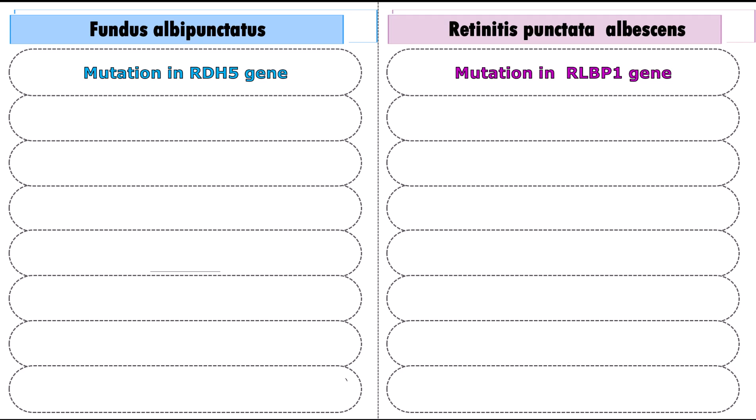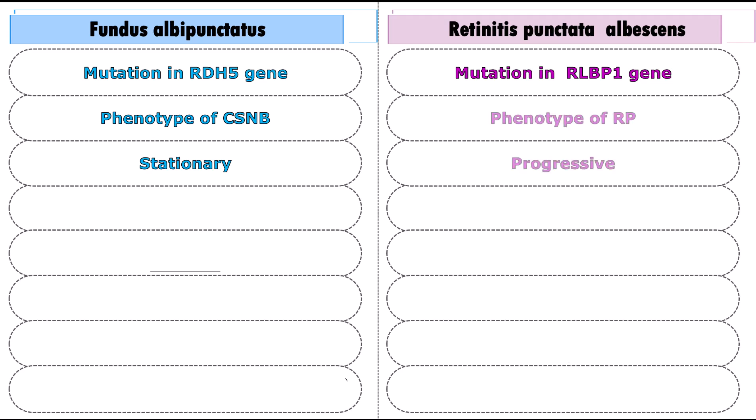First of all, the type of gene mutation is different. Whereas fundus albipunctatus is one of the types of congenital stationary night blindness and therefore stationary, retinitis punctata albicens is one of the non-classic types of retinitis pigmentosa and is progressive.